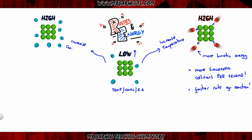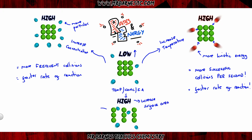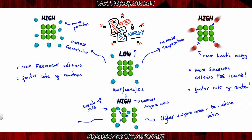If we increase the concentration, there are more particles with the same amount of energy but more of them, so there are more frequent collisions occurring more often — more frequent collisions means a faster rate of reaction. If you increase the surface area, the solid is broken down into smaller pieces so the acid particles can reach more places, giving a higher surface area to volume ratio. A higher surface area to volume ratio means more frequent collisions and therefore a faster rate of reaction.